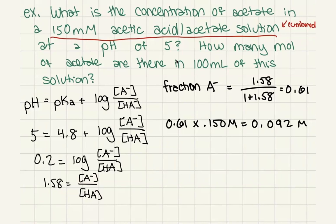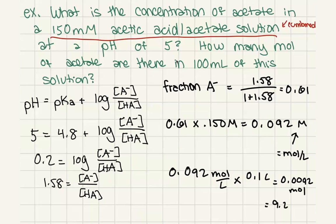If we want to know how many moles of acetate are there in this solution, well, now basically we need to take into account the volume. So remember that molarity is equal to moles per liter, and so we can just multiply it by the number of liters. We take 0.092 moles per liter times 0.1 liters is going to give us a value of 0.0092 moles, which is the same as saying 9.2 millimoles.